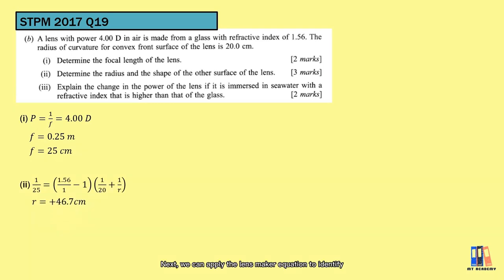Next, we can apply the lens maker equation to identify another radius. Putting all those values, we will obtain positive 46.7cm. The radius is positive, which means it is a convex surface to the air, and the center of curvature is in a denser medium.